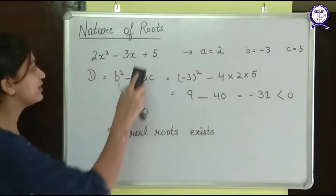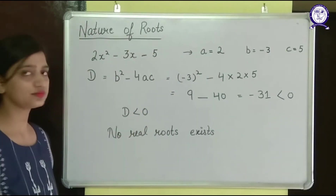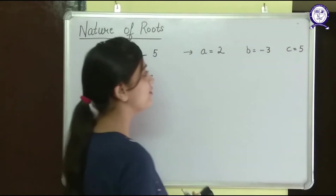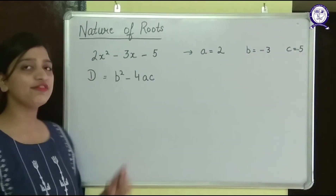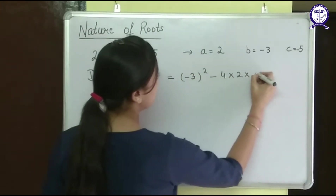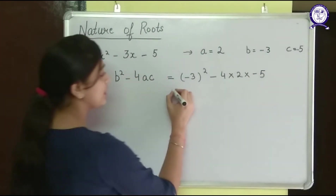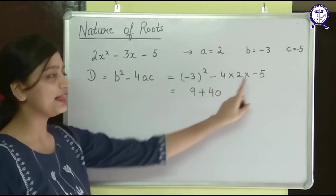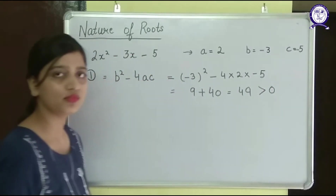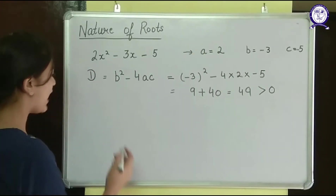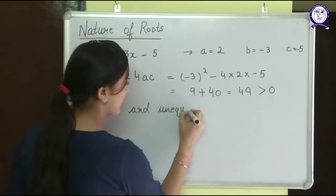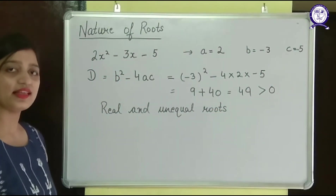Now suppose instead of that equation, I have a different equation where c is minus 5. Again, I will find D. It will be minus 3 squared minus 4 into 2 into minus 5, which is 9 plus 40 — because minus times minus gives plus — so it will be 49. This is greater than 0. When the discriminant is greater than 0, there are real and unequal roots — that is, two roots which are not equal to each other and they are real.